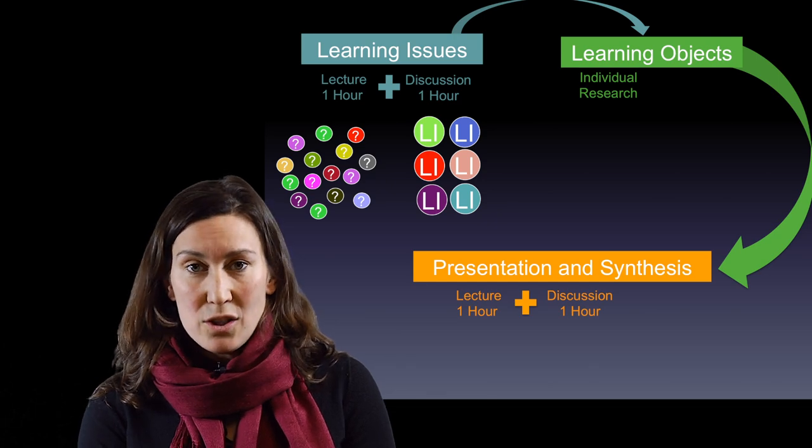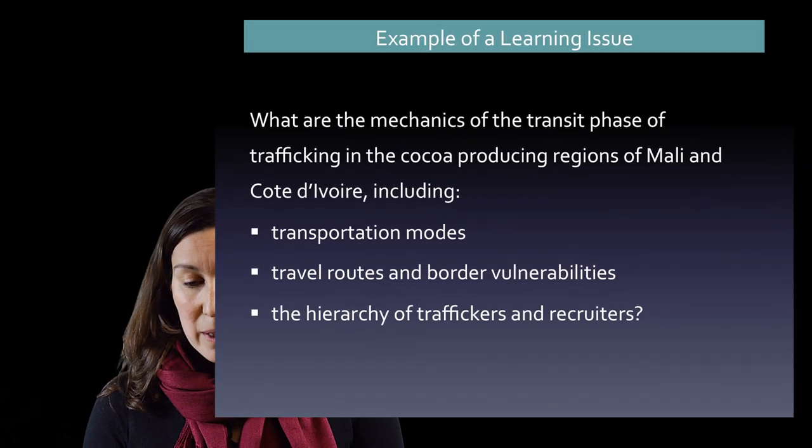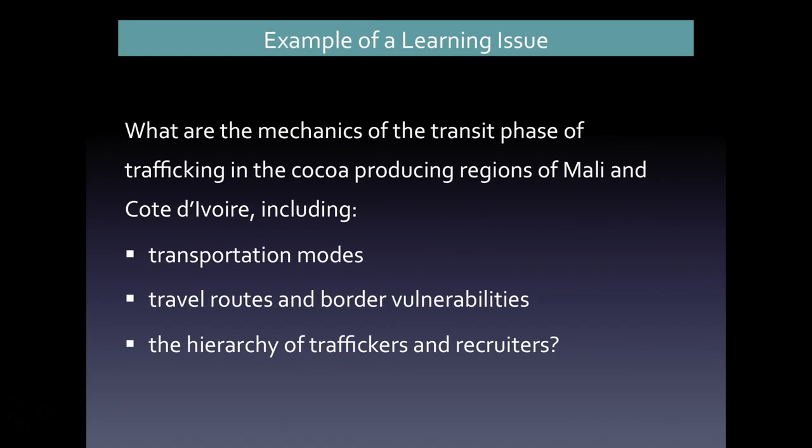By the end of the discussion section so after two class periods together with your team you will generate a number of learning issues. One that is unique for each team member. Now an example of a learning issue would be what are the mechanisms of the transit phase of trafficking in the cocoa producing regions in Mali and Cote d'Ivoire. And they go on to elucidate including transportation modes, travel routes and border vulnerabilities and the hierarchy of traffickers and recruiters. Obviously this question warrants some research and it is one that was generated in the first year of the course.